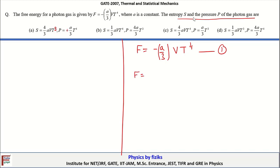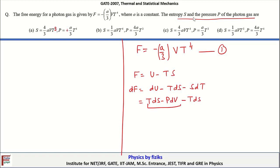To calculate the entropy and pressure of the photon gas, we use the Helmholtz free energy. The differential of the Helmholtz free energy is dF equals dU minus T dS minus S dT. Using the first law dU equals T dS minus P dV, and substituting, the T dS terms cancel, leaving dF equals minus P dV minus S dT.